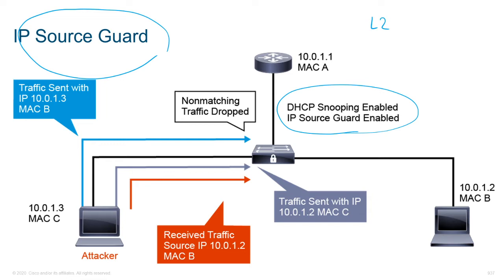On these untrusted ports, we are going to make sure we are learning the IP address that was assigned to that end user. So in the event that an end user is trying to spoof their traffic — say the correct IP on that interface was 10.0.1.3 but the attacker is trying to spoof traffic from 10.0.1.2 — if the traffic doesn't match, we're going to go ahead and drop it.